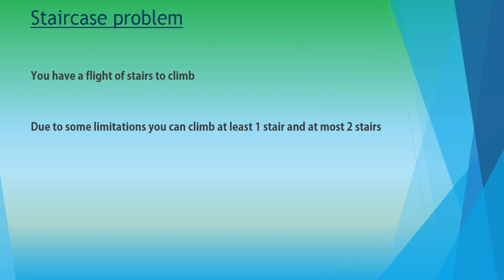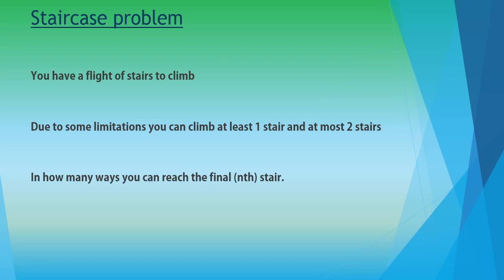That means you can climb only one step at a time or you can jump not more than two steps at a time. You can't jump three steps at a time. So if you are standing at ground zero, you can either go to stair number one or you can directly go to stair number two, but not above that. The question is: in how many ways can you reach the final end stair?